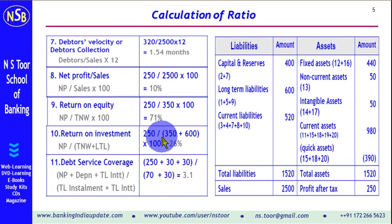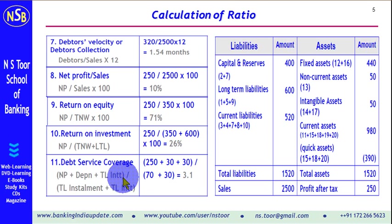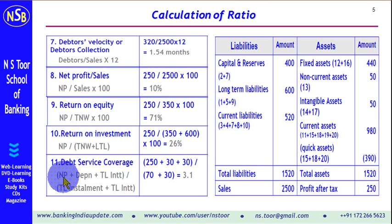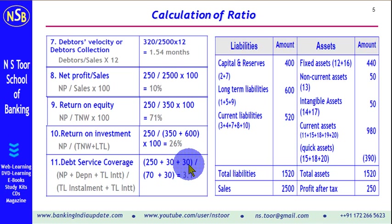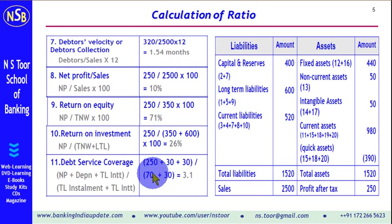Debt service coverage ratio is used for evaluating term loan proposals and determining term loan installments. The formula is: (net profit after tax + depreciation + term loan interest) divided by (term loan installment + term loan interest). Net profit is 250, depreciation is 30, and term loan interest is 30, giving a numerator of 310. The denominator is term loan installment 70 plus interest 30, equaling 100. So 310 divided by 100 gives a ratio of 3.1. The benchmark level is 2, so this is satisfactory.